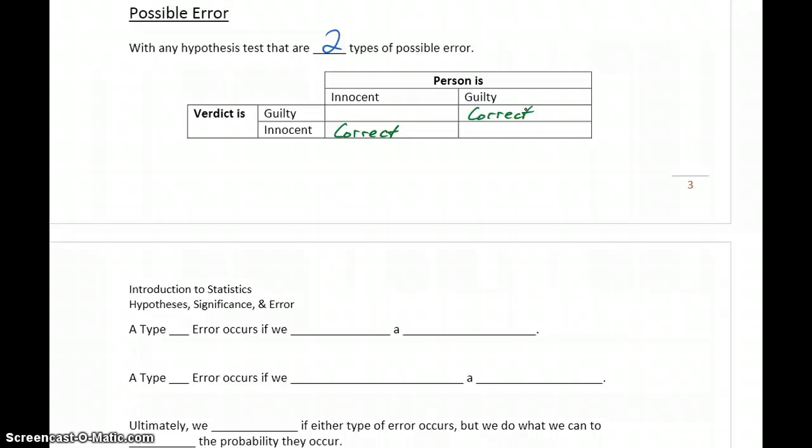In a courtroom case, we may never actually know whether the person really committed the crime or not. We just have the evidence that may or may not be overwhelming. The only person who probably knows for sure is the person who committed the crime. Just like in hypothesis testing, we never know for sure if we deliver back one of these correct answers or one of our incorrect answers.